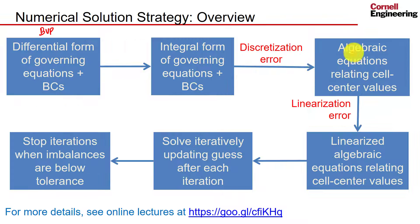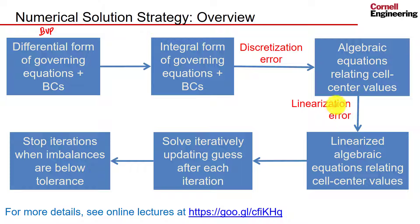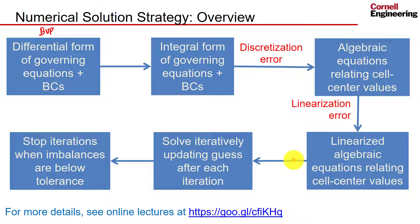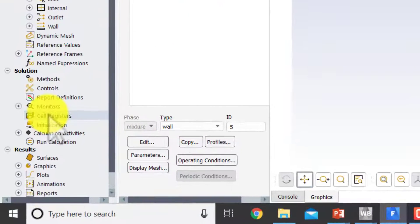In terms of inverting these algebraic equations — from the pre-analysis — these equations are nonlinear, so one has to linearize them about guess values, introducing a linearization error. You minimize that error by updating the guess iteratively, and you stop the iterations when your mass and momentum imbalances fall below a tolerance. If the imbalances were exactly zero you'd have an exact solution, but in practice they'll just be very small.